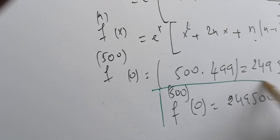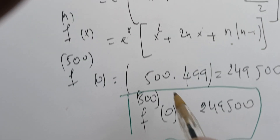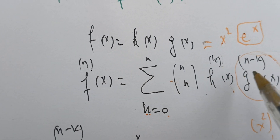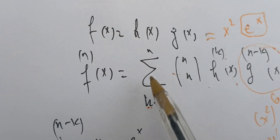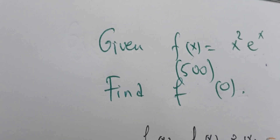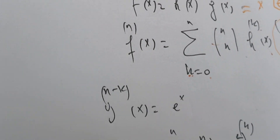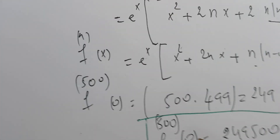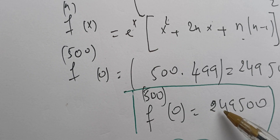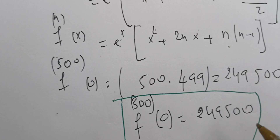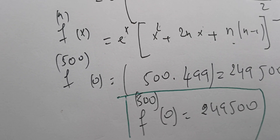So the value is 249,500. We used the Leibniz rule — the formula for the nth derivative of a product — to arrive at this answer. If you see any errors or mistakes, please let me know. Thank you very much.